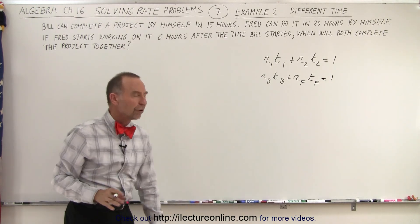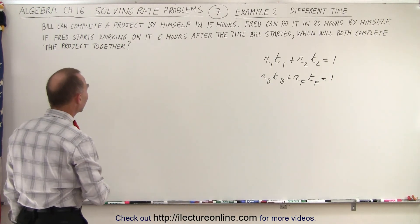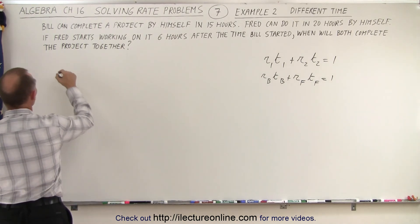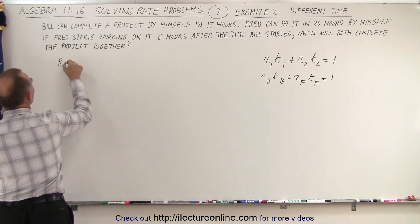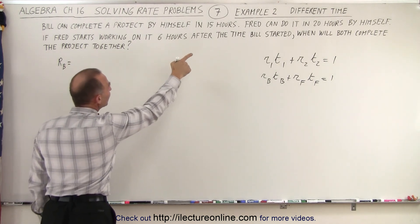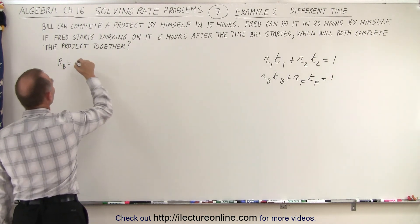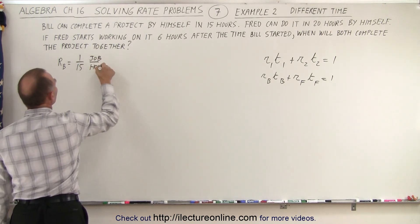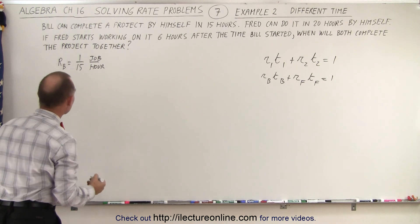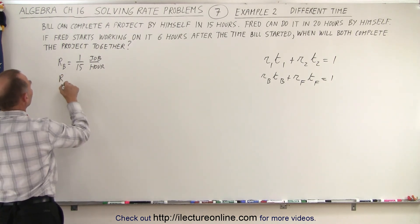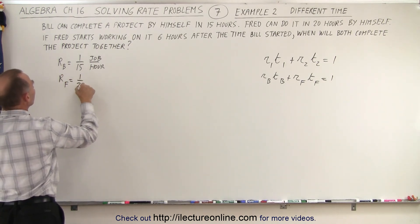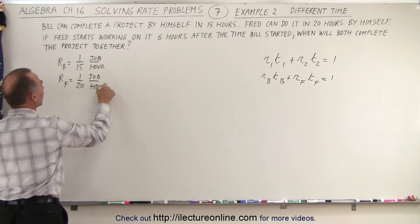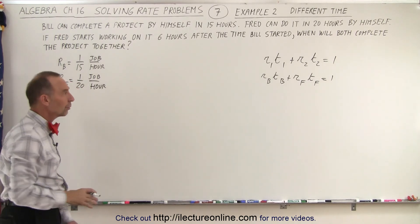So how do we get the rate of the two people Bill and Fred? Well, the rate is the inverse of the time they can do the job by themselves. So the rate of Bill is going to be one-fifteenth of a job per hour because Bill can do the whole job in 15 hours. And the rate of Fred is going to be one-twentieth of the job done every hour because Fred can do the whole job in 20 hours.